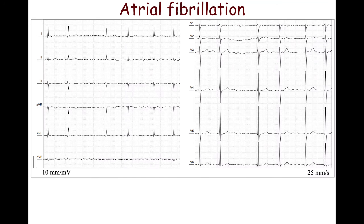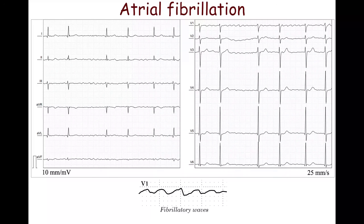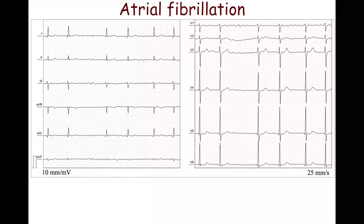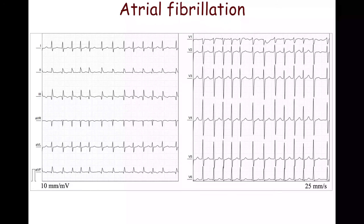This ECG shows irregular QRS complexes, a mean ventricular rate of 62 beats per minute, and absence of an isoelectric baseline due to fibrillatory waves. QRS complexes are not preceded by a P wave.